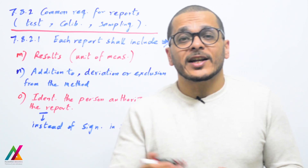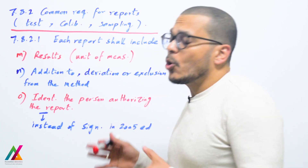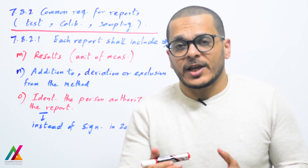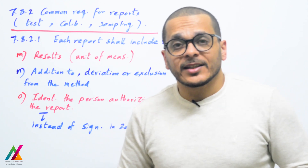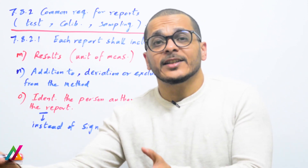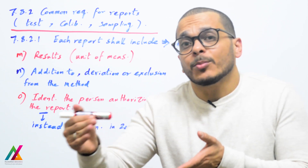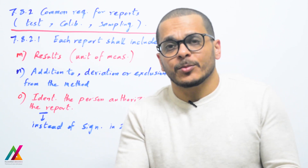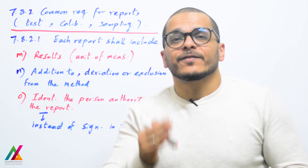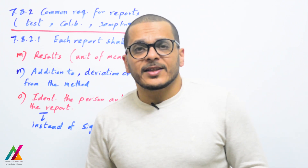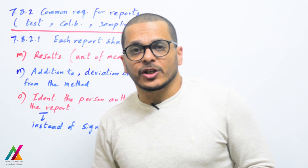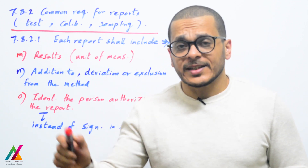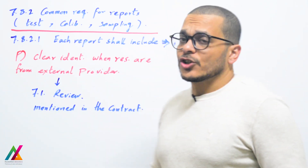Any deviation from or exclusion to the method, if performed before analysis of the sample, shall also be recorded. However, if you perform any deviation to the method before analysis, you must inform the quality lead — there is a process for that — and the unit shall technically authorize this deviation. All information related to this deviation will be available in different forms, approved by the technical lead and the quality lead. Therefore, it does not need to be recorded in the report, but shall be available if requested. You shall also identify the person authorizing the report. In the 2005 edition, a signature was sufficient, but now you must identify the name of the person authorizing the report to ensure clear identification.